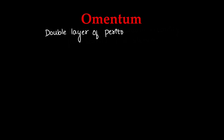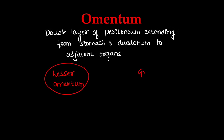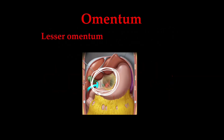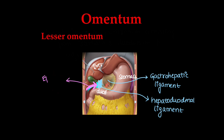Now let us see what is omentum. This is also a double layer of peritoneum like mesentery, extending from the stomach and duodenum to adjacent abdominal organs. We have two types: the lesser omentum and the greater omentum. The lesser omentum extends from the lesser curvature of the stomach, duodenum and liver. The gastro-hepatic ligament and the hepatoduodenal ligament both constitute the lesser omentum. The foramen behind the lesser omentum is the epiploic foramen.